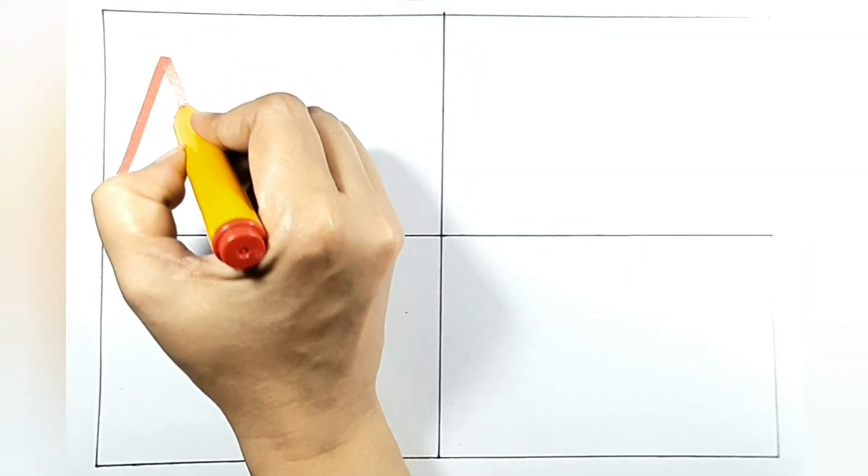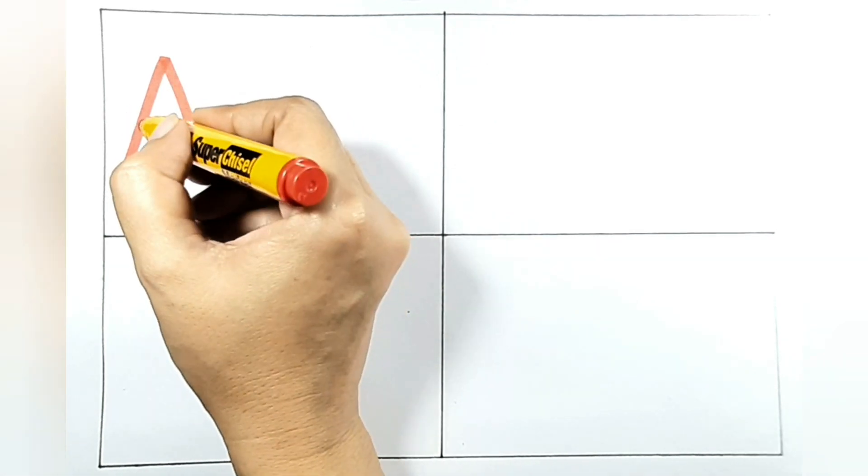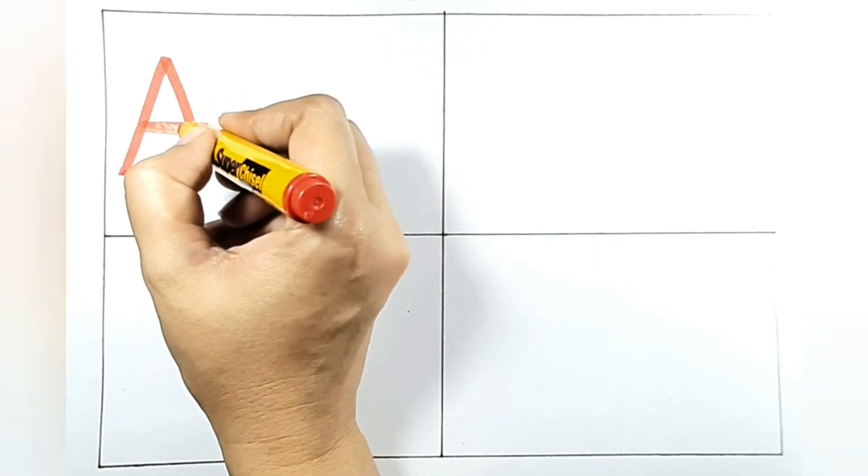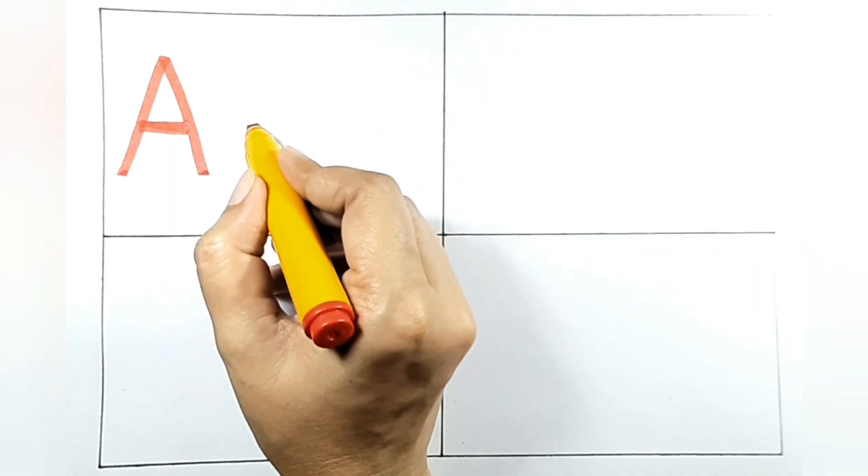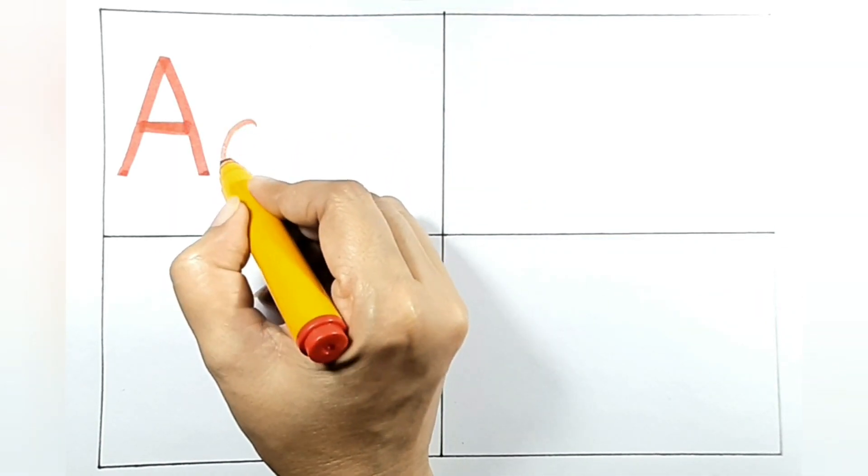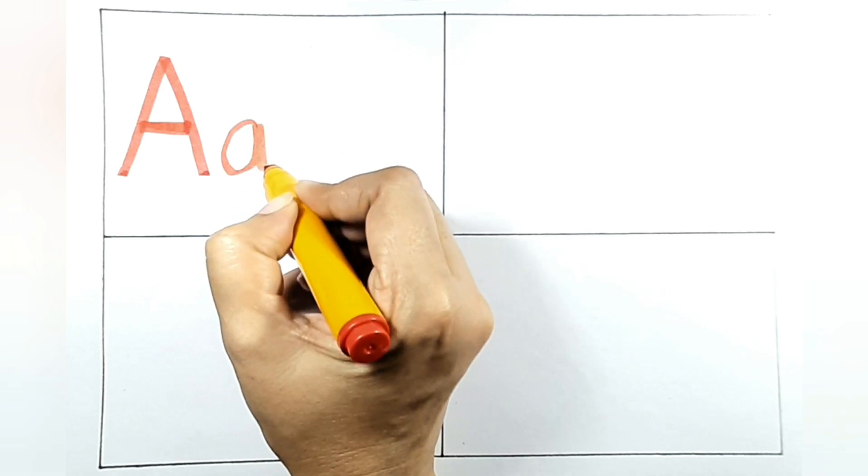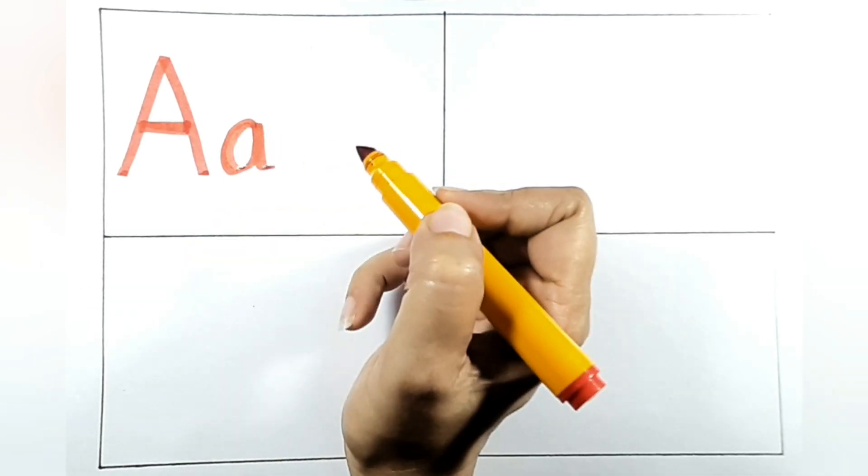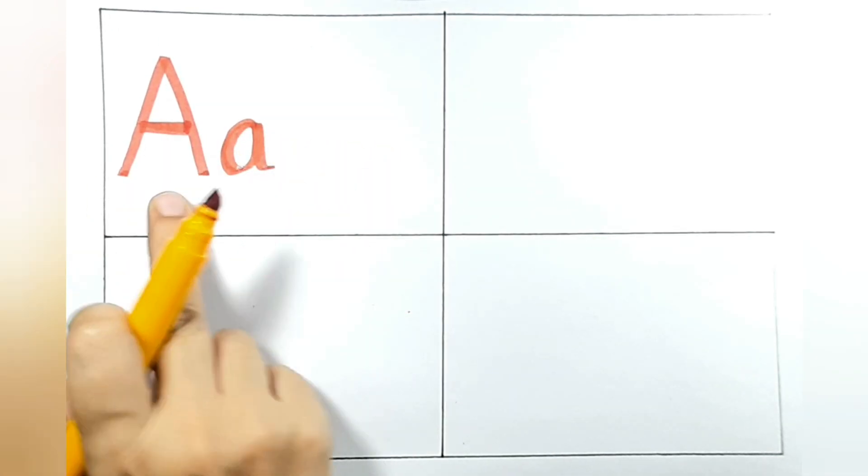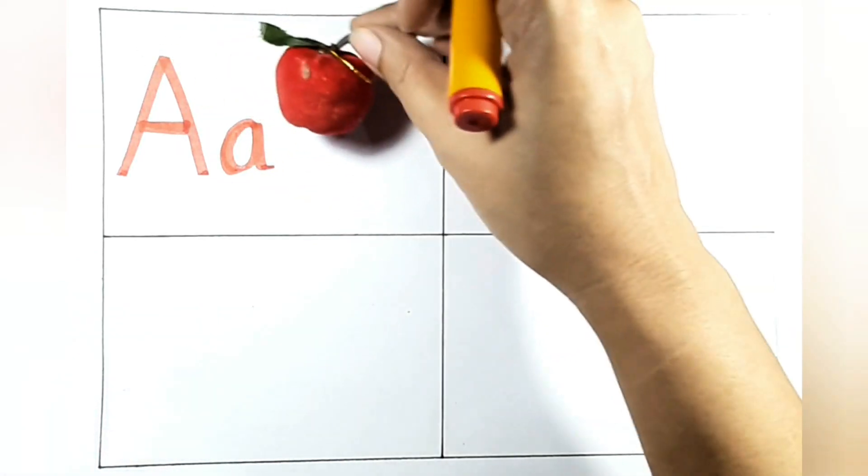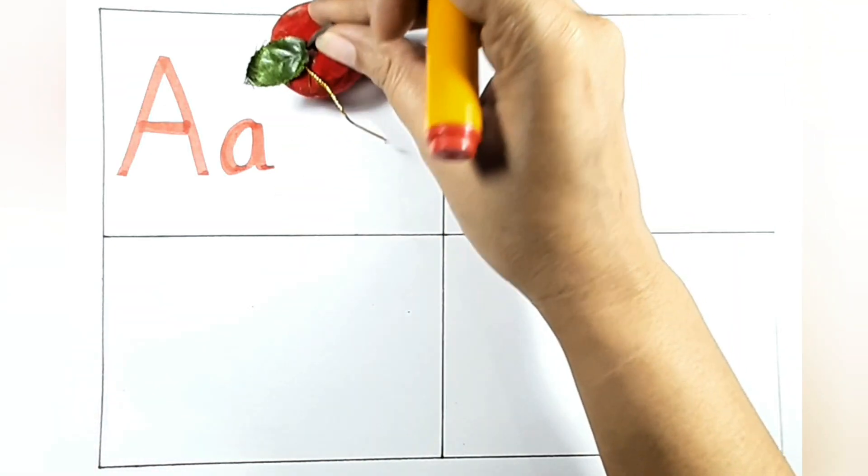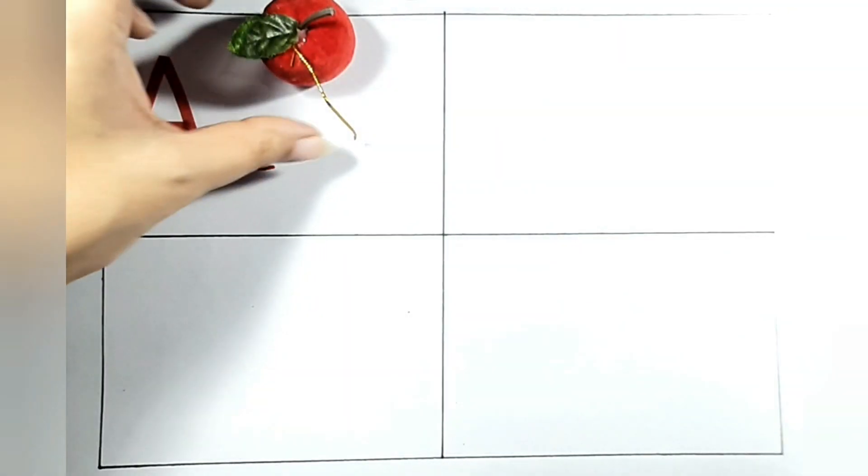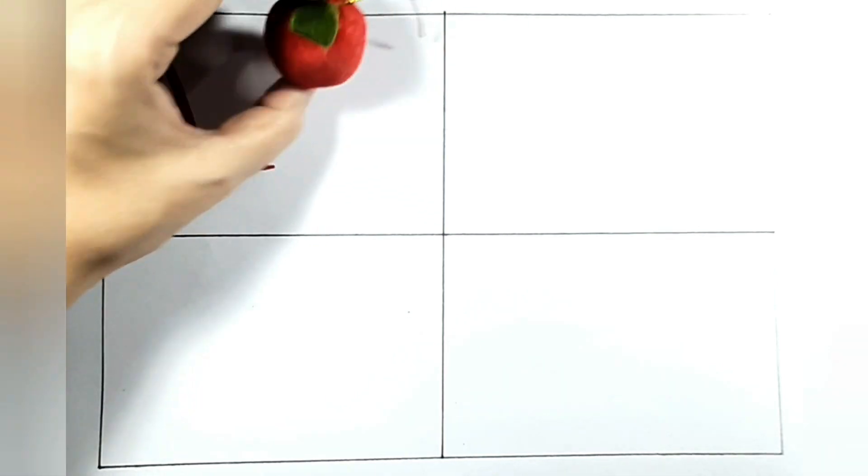First I will write capital A. Only in three steps we can write capital A. Now small a, make a round, get a line like this. This is small a. A for what? Is a for, guess, guess? Yes, a for apple. I show you an object with every alphabet.